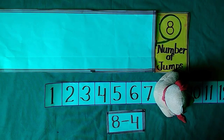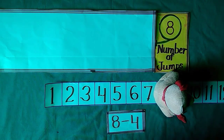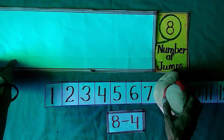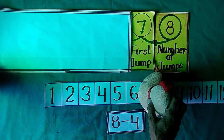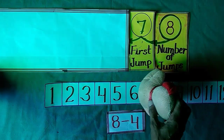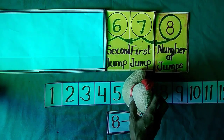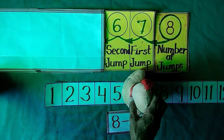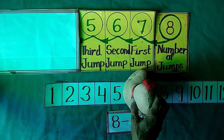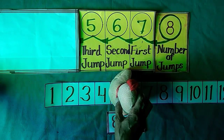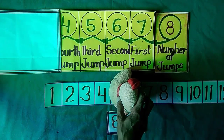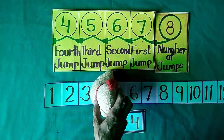Jimmy stands at 8 and he wants to take 4 backward jumps. Let us see where he reaches after 4 backward jumps. With first backward jump, he reached at 7. With second backward jump, he reached at 6. With third backward jump, he reached at 5. When he takes his fourth backward jump, he reached at 4.